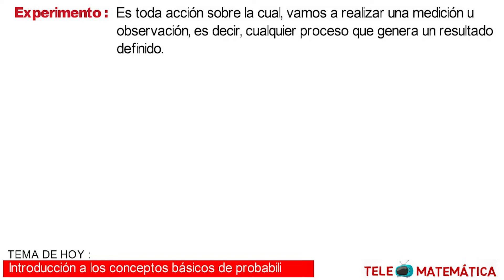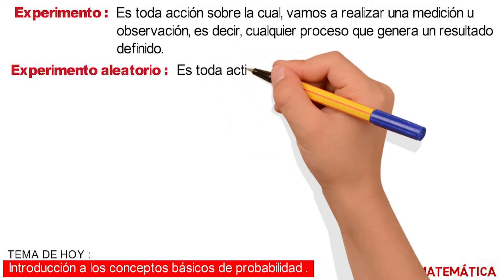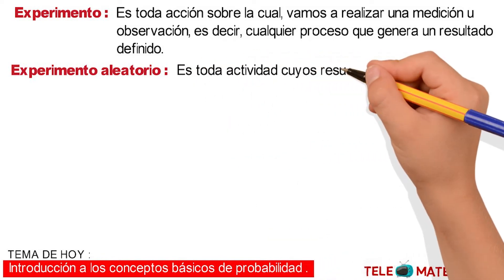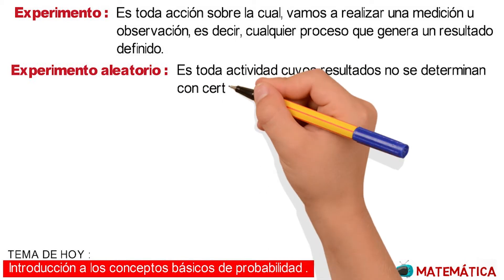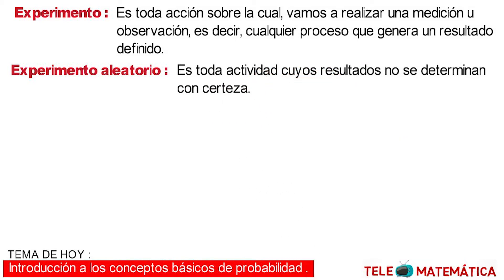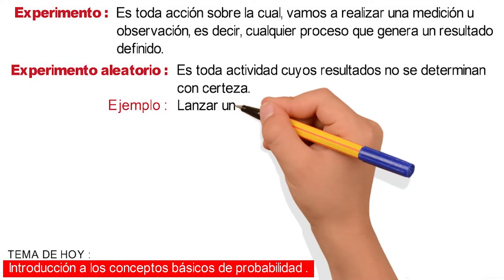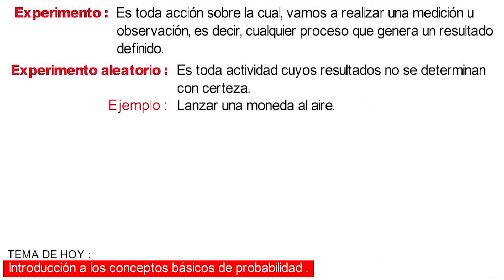En segundo lugar, experimento aleatorio, que se define como toda actividad cuyos resultados no se determinan con certeza. Por ejemplo, lanzar una moneda al aire, que puede caer de un lado de la moneda o del otro lado.